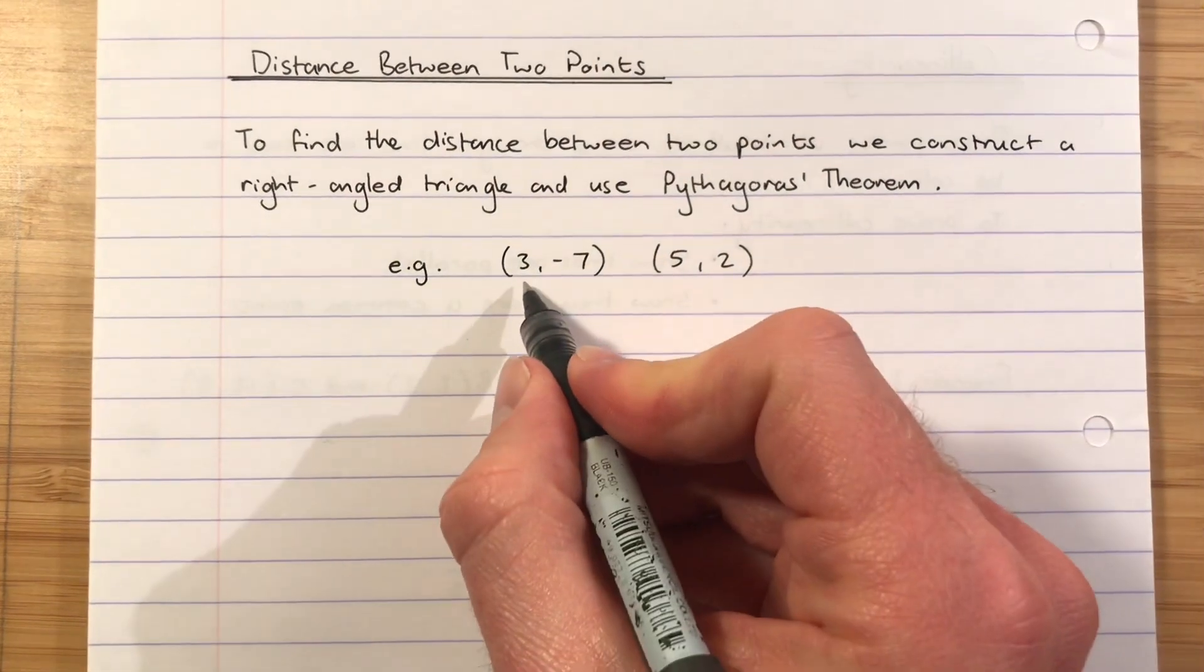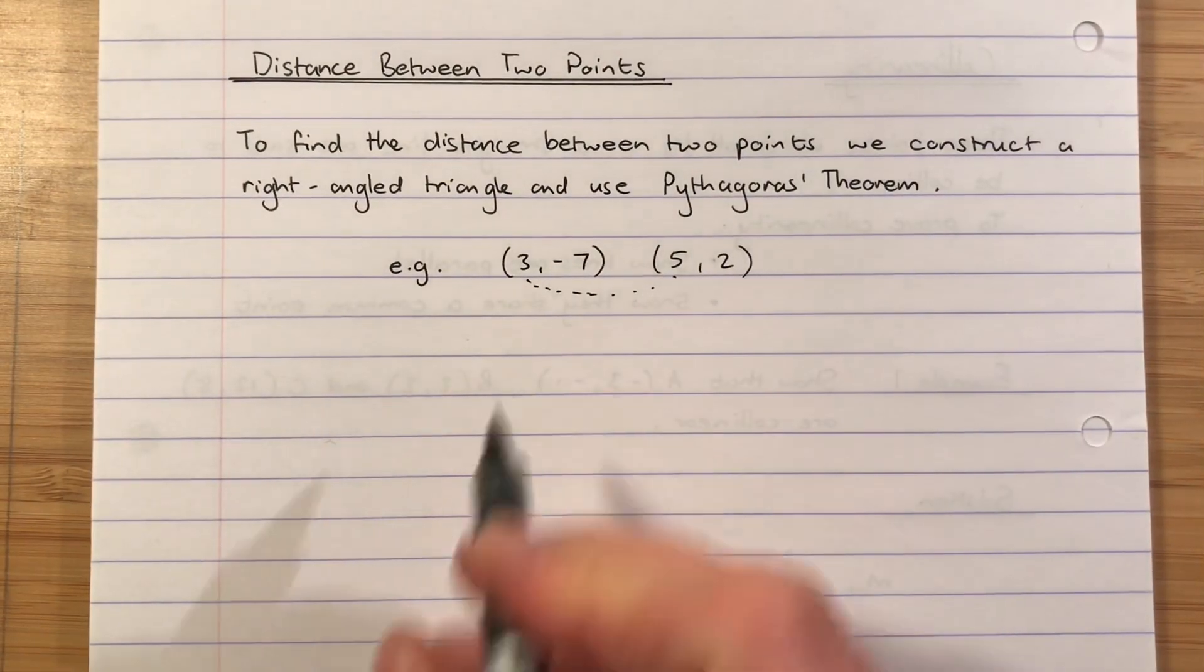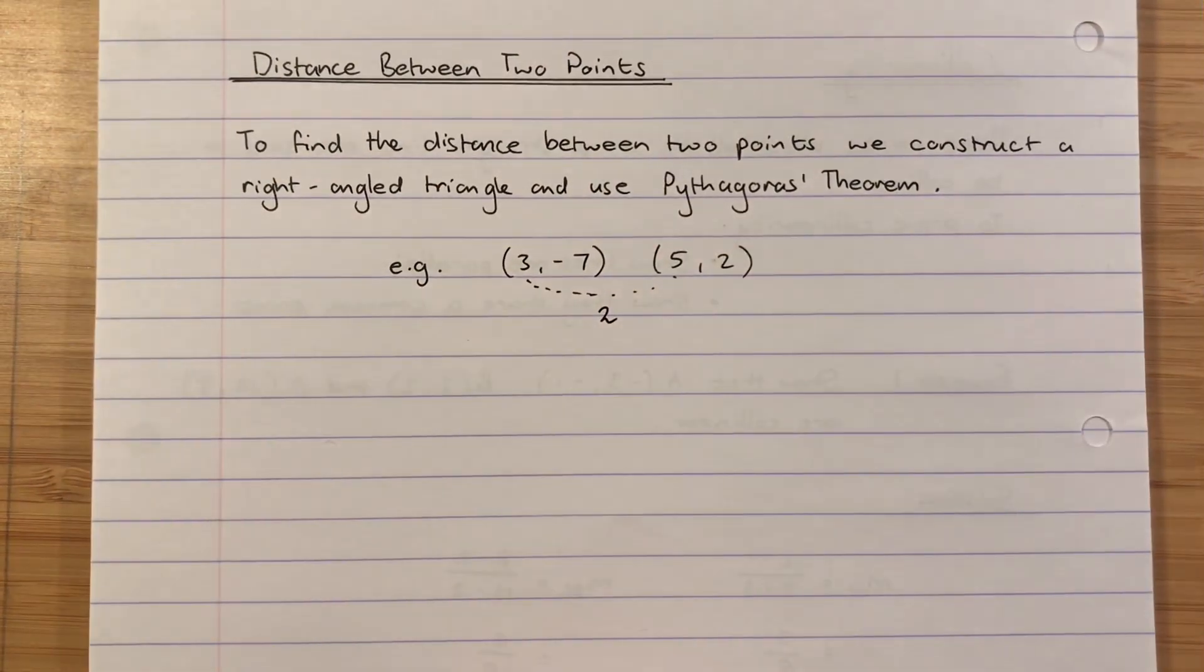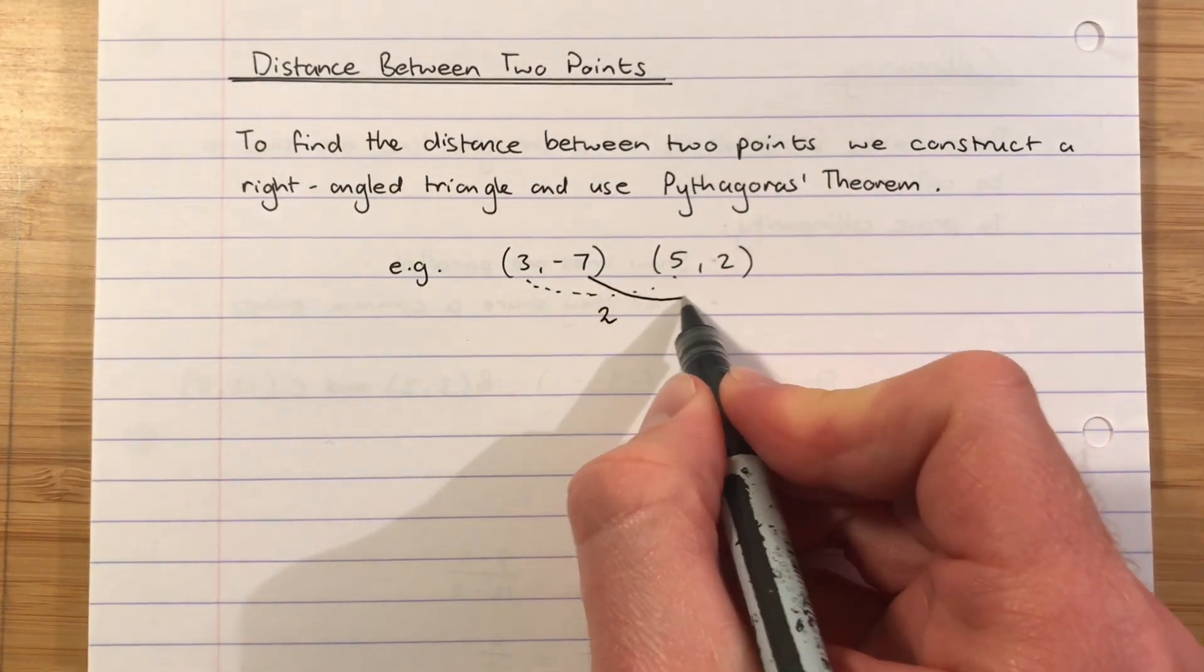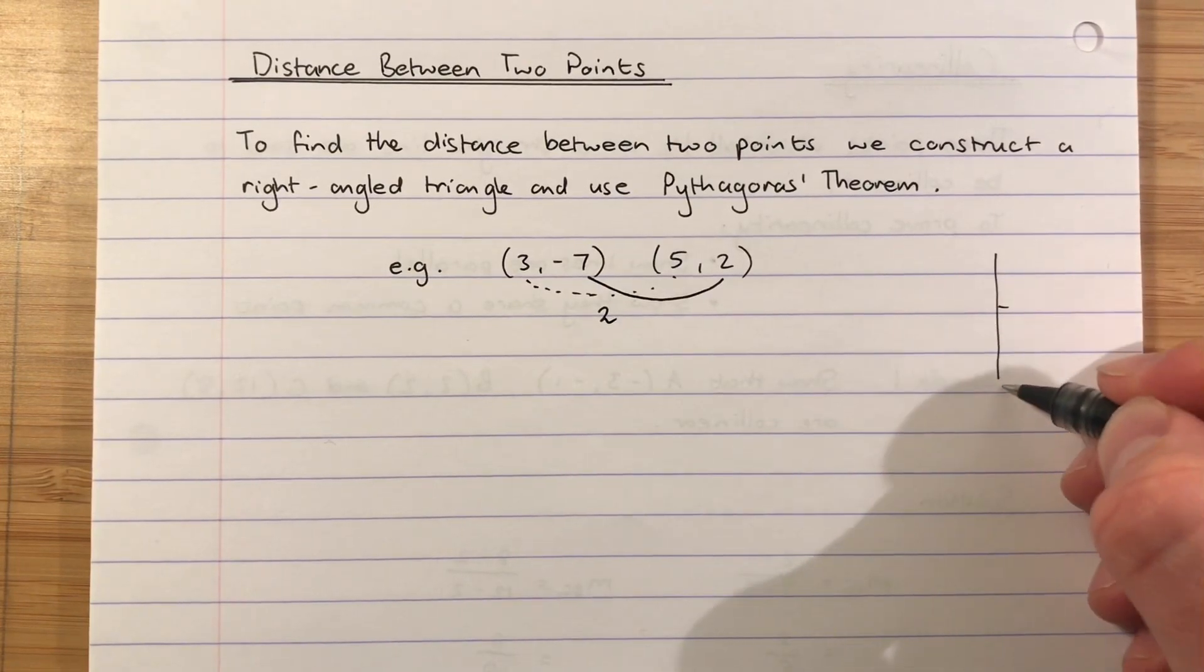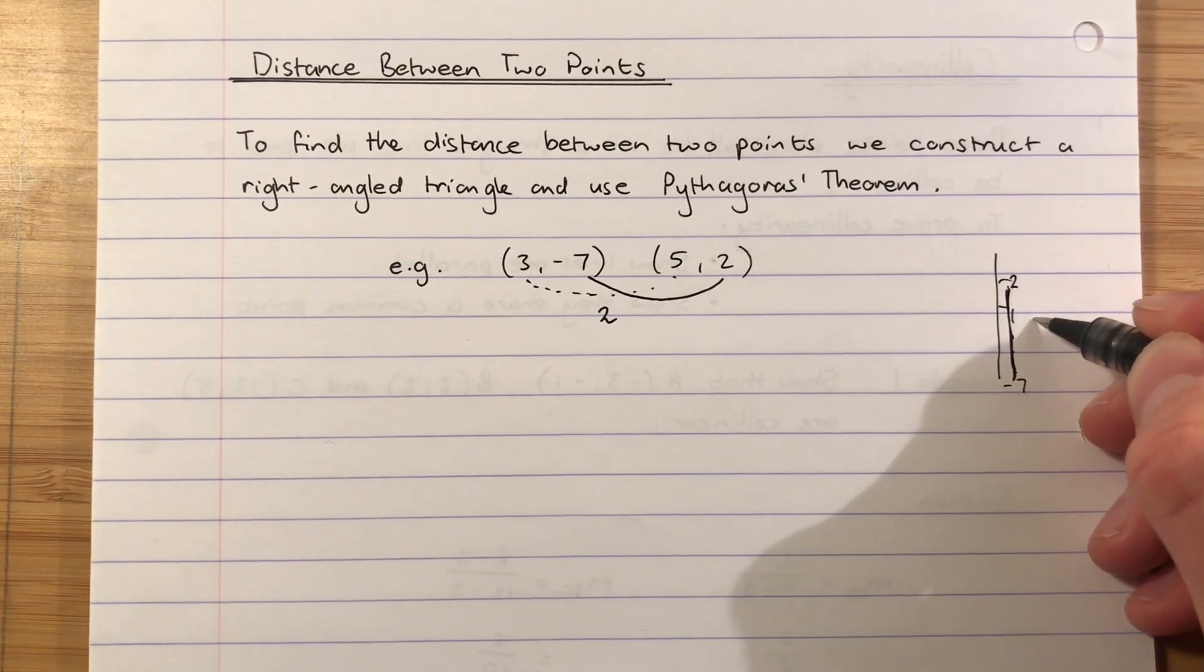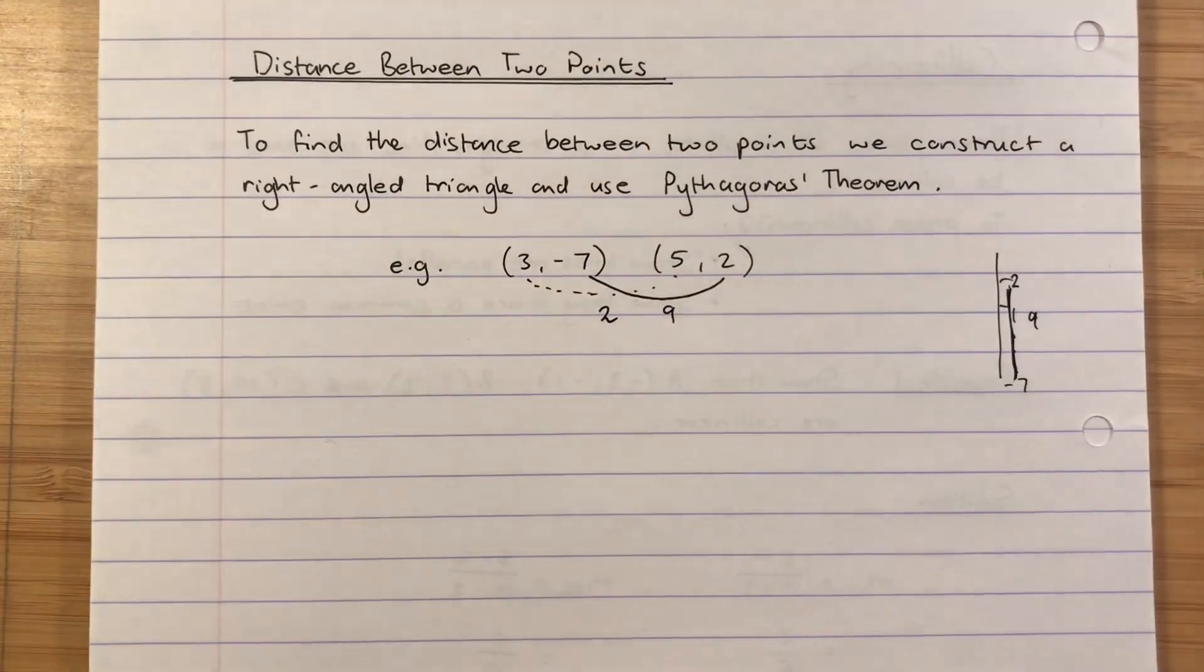As I mentioned, we'll talk about the x distance. Now that is the distance from 3 to 5. So from 3 to 5, it is a distance of 2. I'm going to mark that on there. And then I want the distance from negative 7 up to 2. So if you imagine on your number line, you're all the way down at negative 7 and you want to get up to 2. How big is that distance in total? It's going to be 9.